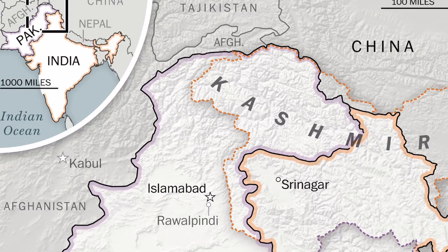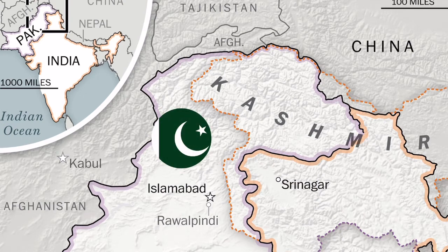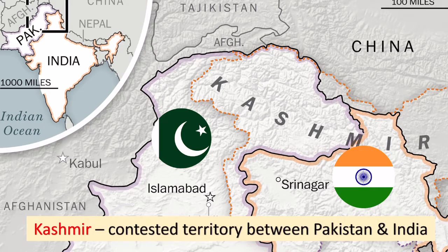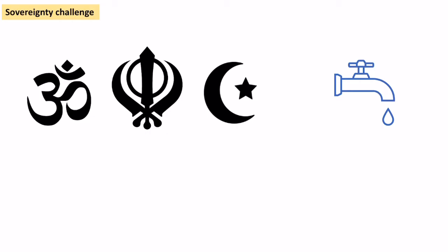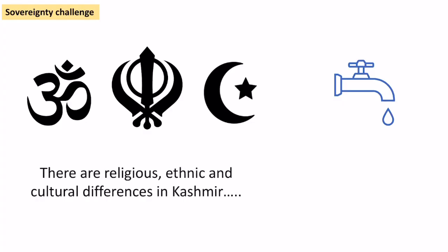The area I'm going to look at is in northwest India — it's an area called Kashmir and it borders Pakistan. Since the partition of India when it left the British Empire, there has been conflict in this region. It's contested territory where the borders are being argued over, with lots of conflicts due to religious, ethnic and cultural differences.